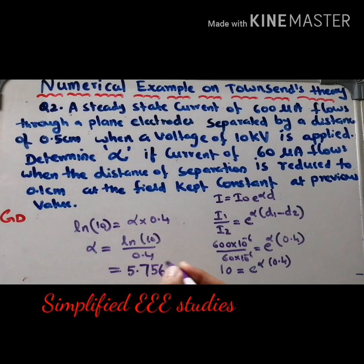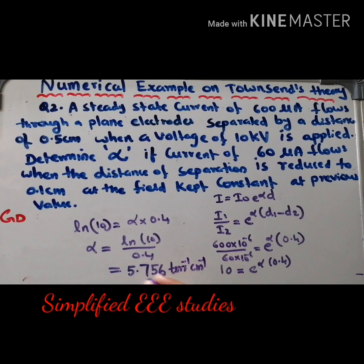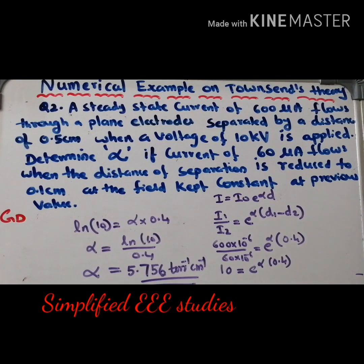The unit of alpha is Tor⁻¹ cm⁻¹. So alpha ≈ 5.75 Tor⁻¹ cm⁻¹ — this is the final answer. I hope you could understand both problems. Both are most important questions for university examinations. Maybe some objective questions will also be asked on this topic. Please verify the answers and the method, and post any doubts in the description box.